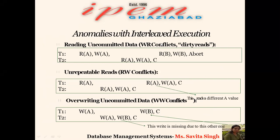Now the next topic is anomalies with interleaved execution. Anomalies are problems that may arise during interleaved execution. In DBMS there are three types of anomalies that can cause conflicts: first is write-read, second is read-write, and third is write-write. These anomalies can be the reason for conflicts in the database management system.